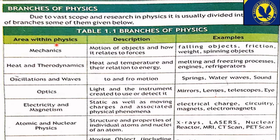پہلا area within physics ہے mechanics۔ Mechanics is motion of objects and how it relates to forces — یعنی objects کس طرح سے move کرتے ہیں، کس طرح سے حرکت کرتے ہیں، ان کا آپس میں کیا تعلق ہے، force کے ساتھ کیا تعلق ہے، کتنی force apply کی جائے تو کون سا object کتنے دور تک حرکت کر سکتا ہے۔ Falling objects، friction، weight، spinning objects — یہ مختلف چیزیں mechanics کہلاتی ہیں۔